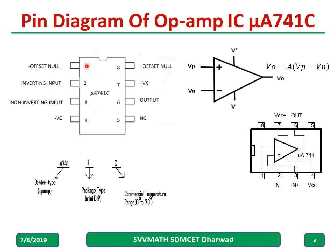Remember the pin numbers — you can pause and see them. Inverting is pin number 3, non-inverting — many students interchange these two while writing in the exam. Plus VCC, minus VEE is pin number 4. This is the symbol used to represent the op-amp, and the output is given by the gain times the input difference VP minus VN. This is how we write the pin numbers on the IC, along with the device name, company, packaging type, and temperature rating.